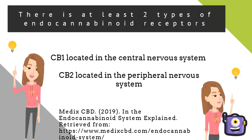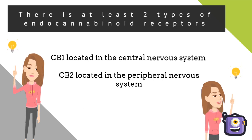CB1 releases endocannabinoids to the brain and nerves in the spinal cord. CB2 releases endocannabinoids to the extremities, digestive, and immune system.